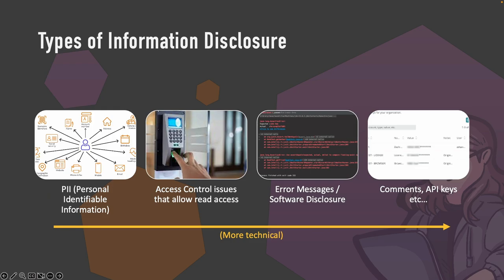So, types of information disclosure. I've broadly put together four different types based on likely first-bug potential and ranked them from less technical to quite technical. We have: personal identifier information — data about a person that shouldn't be public; access control issues that allow read access, such as being able to access someone else's account details; error messages and software disclosure vulnerabilities, which are often part of a bug chain where you cause an error, see what software they're using, then exploit known vulnerabilities or application-level issues; and finally, looking through code to find comments, API keys, or anything sensitive in there.